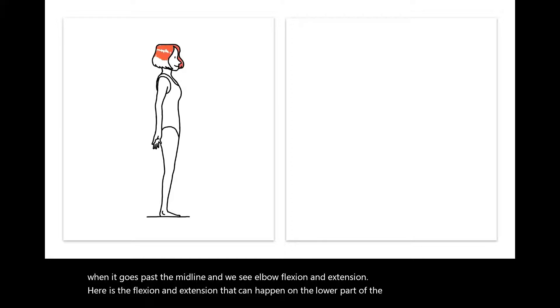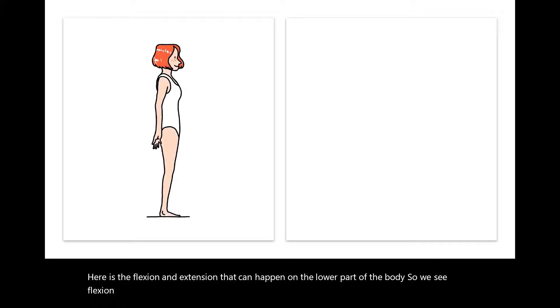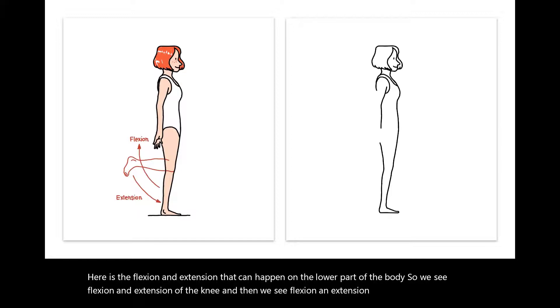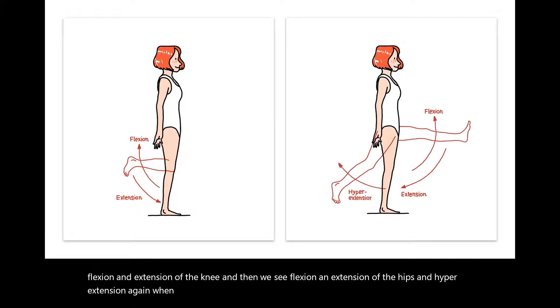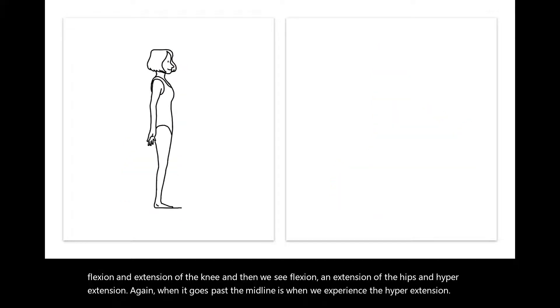Here is the flexion and extension that can happen on the lower part of the body. We see flexion and extension of the knee, and then flexion and extension of the hips. Hyperextension, again, is when it goes past the midline.